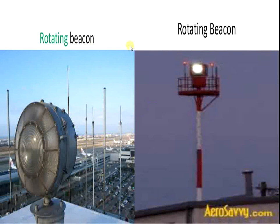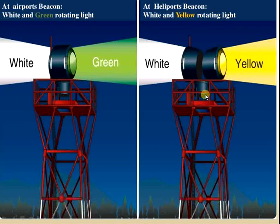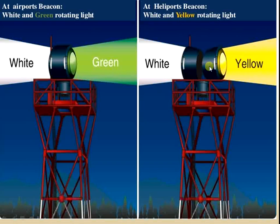The rotating beacon can be either white or yellow. It is installed on top of the tower or airport building, easily visible from miles away. At airports, a white and green rotating light beacon is installed; at heliports, a white and yellow rotating light beacon is used. This is very helpful during the night.